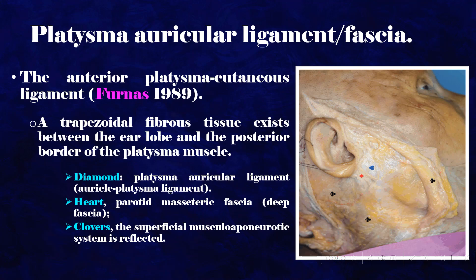A trapezoidal fibrous tissue exists between the ear lobe and the posterior border of the platysma muscle.